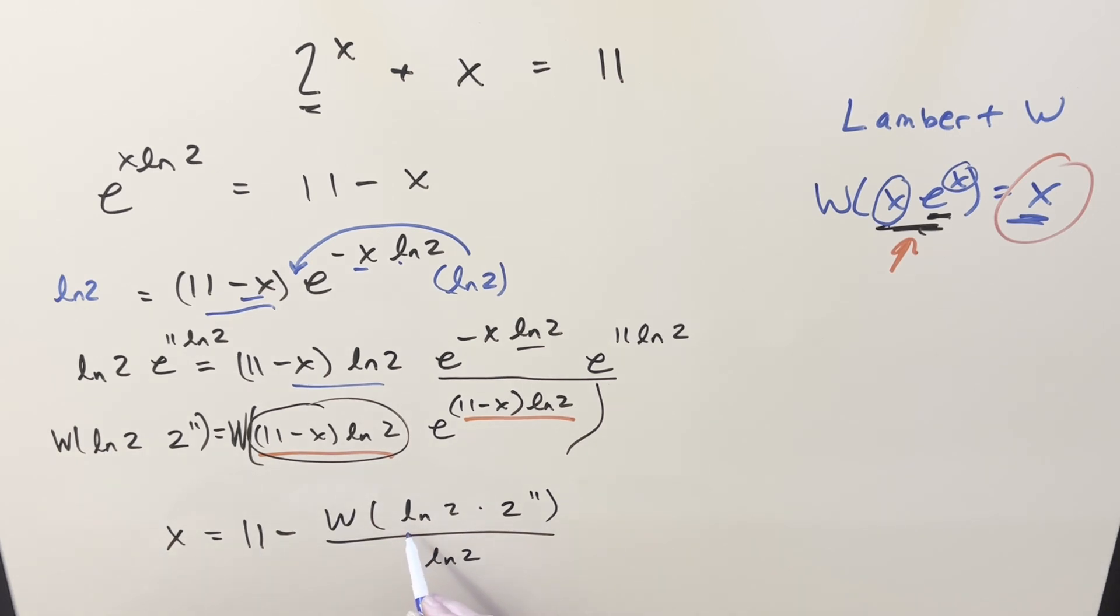One thing we can notice about this, the input on the Lambert W function, this value is definitely going to be positive. ln 2 is like 0.69, but 2 to the 11 is 2048. So this is going to be something between 1000 and 2000. Not really sure, but definitely positive.